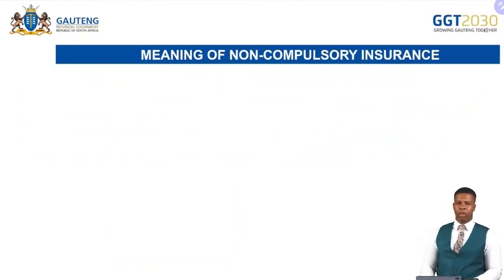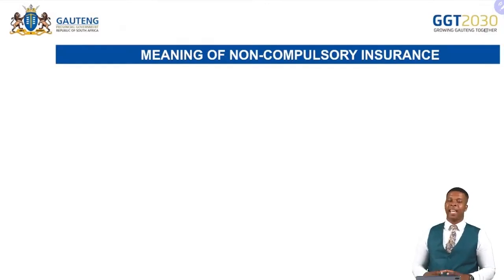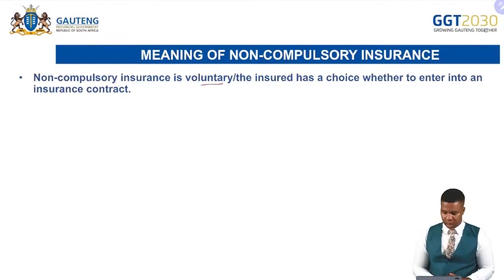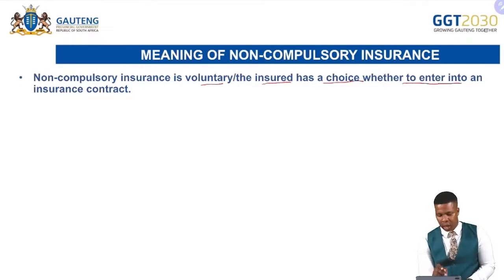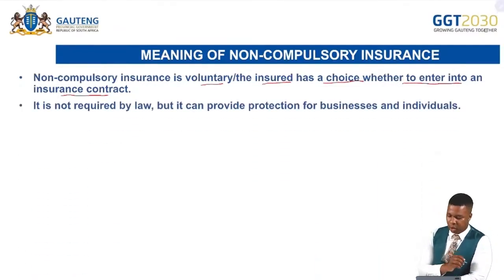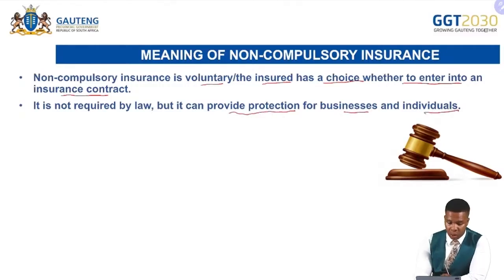Now, the meaning of non-compulsory insurance. Insurance is not always compulsory — when we say non-compulsory, we specify that businesses can choose whether or not to take the insurance. Non-compulsory insurance is voluntary, meaning the business can choose not to take it. It means the insured has a choice whether to enter into an insurance contract or not. It is not required by law, but it can provide protection for businesses and individuals.